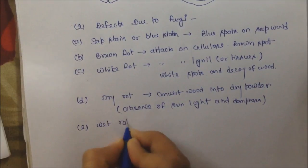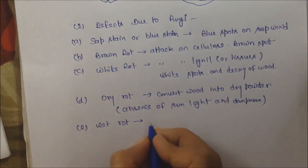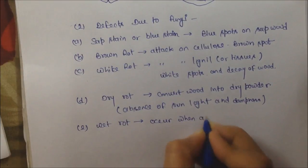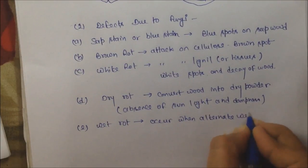Next is wet rot. It occurs when alternate wetting and drying and fungi decompose the tree.